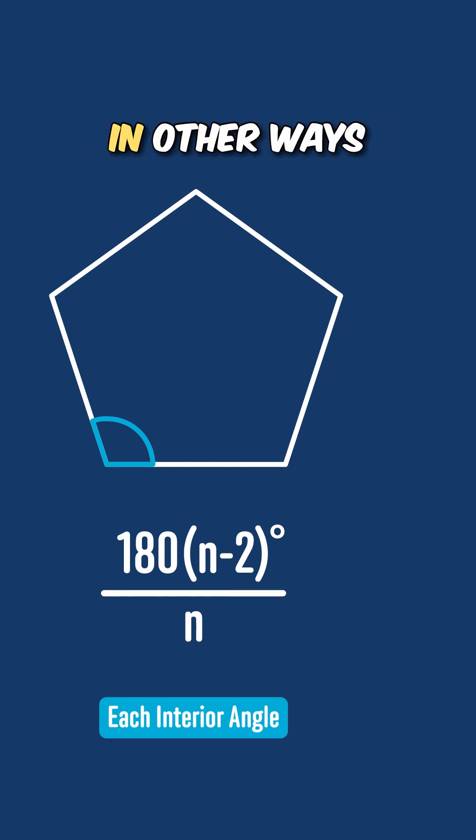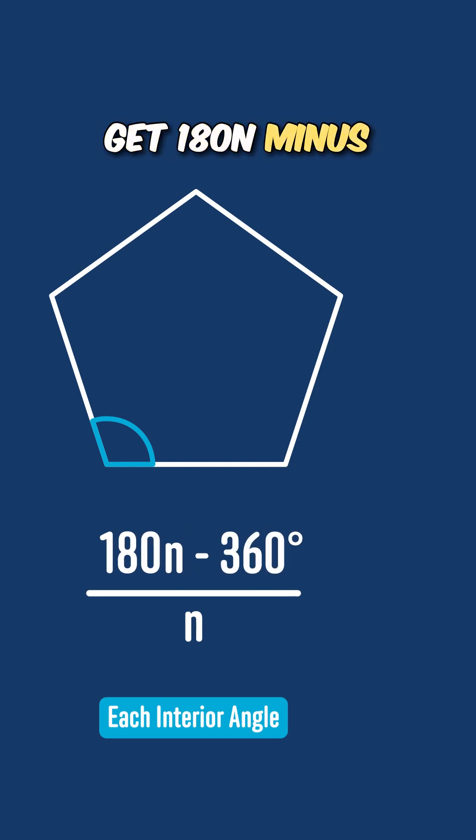You'll sometimes see this written in other ways, because if we start with 180(n-2) over n, and then expand the bracket in the numerator, we get 180n-360, all divided by n.